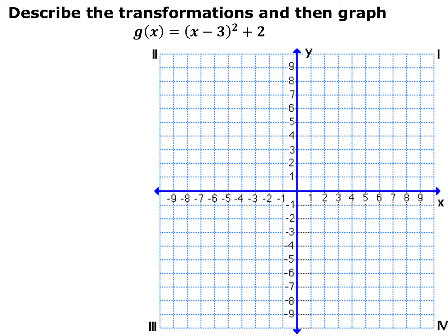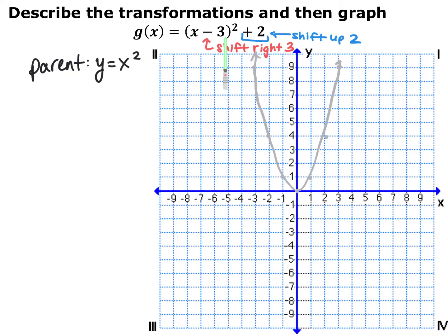For this example, we have g(x) = (x − 3)² + 2. Whenever you're doing transformations, the idea is to start with your parent function and what it looks like, then identify what transformations are being done to it. The parent function here is y = x², and then inside we're subtracting three from the x's, which means we shift everything to the right three. Adding two on the end shifts everything up two. You can take each point and shift right three and up two.